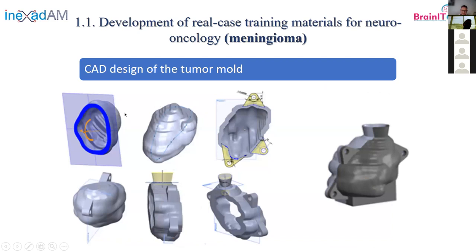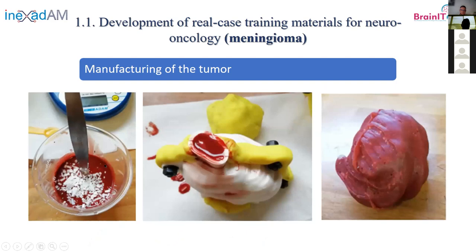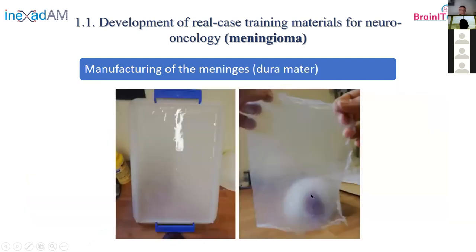To make the tumor, we used the previously segmented STL file. We cut and divided it into two parts, added tabs, a hopper, and a cube to stabilize the mold. The idea was to pour the silicone with pigments and crushed PLA to mimic the calcification inside the tumor. Here you can see the 3D printed mold of the tumor, the mixture with the PLA, pouring into the mold, and after the curing process, the final result. The yellow is just some plaster to seal the mold.